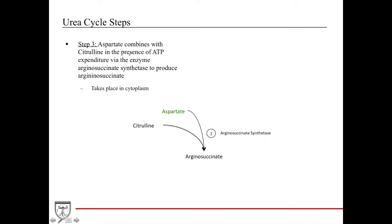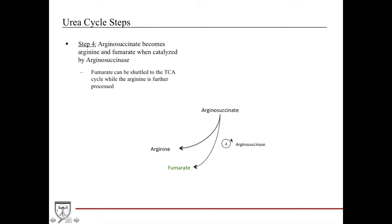In step three, aspartate now comes in. This is that one amino acid that you need to know. Aspartate comes in, combines with citrulline in the cytoplasm now in the presence of argininosuccinate synthetase and produces argininosuccinate. What I love about the urea cycle is all these enzymes are named so appropriately.